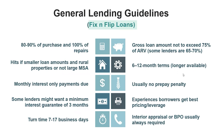General lending guidelines on fix-and-flip loans. On the 100% program, you need eight-plus deals in the past five years — a combination of flips and rentals. We need to verify your experience. If you're newer and have done only one or two deals, you can potentially get 80–90% of purchase price and 100% of repair costs. Lenders typically cap the gross loan amount at 75% of the ARV. The appraiser gives them a subject-to-completed value, and the gross loan amount can never exceed 75% of that ARV. If your ARV is $325,000, multiply by 75% — max loan amount is $243,750.